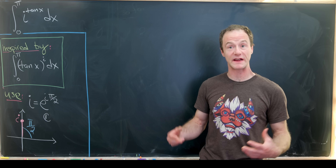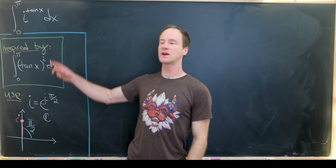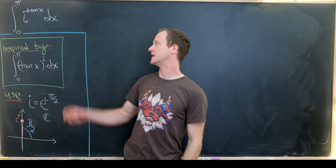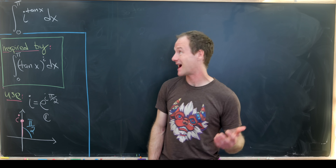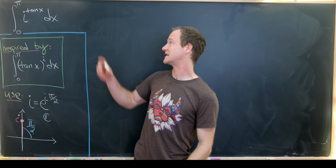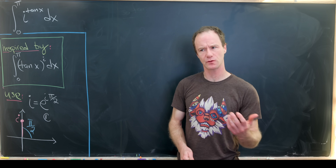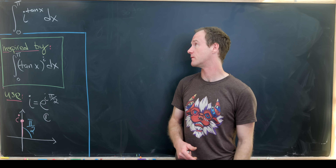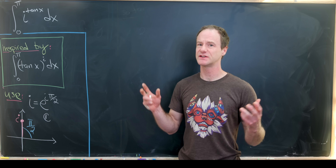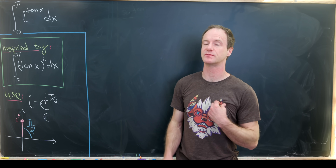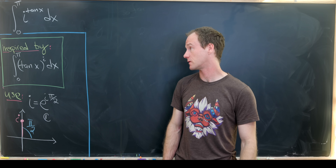Today we're going to evaluate the integral from 0 to π of i to the tangent of x dx, where by i I mean the square root of minus 1 — more precisely, the principal square root of minus 1, just to be careful.